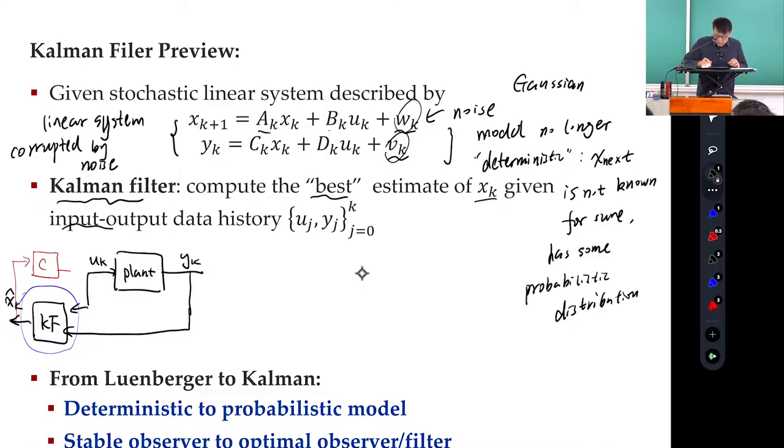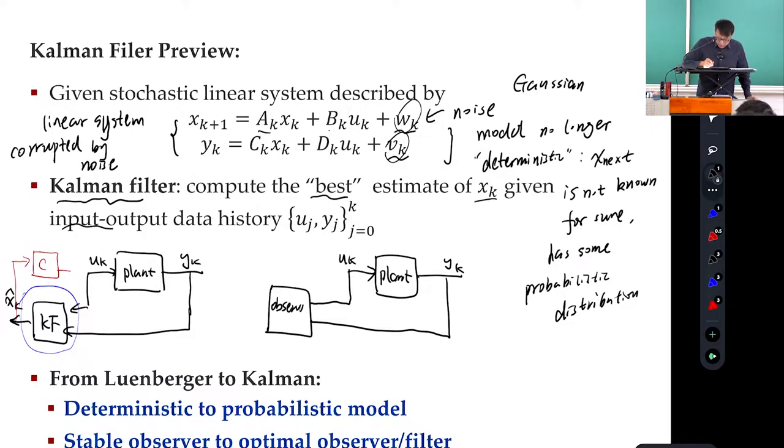Let's draw the Luenberger observer. I still have the same plant. And this is UK. This is YK. And then I have this observer. Observer also gave me my XK hat. These two things, functionality-wise, they are the same.